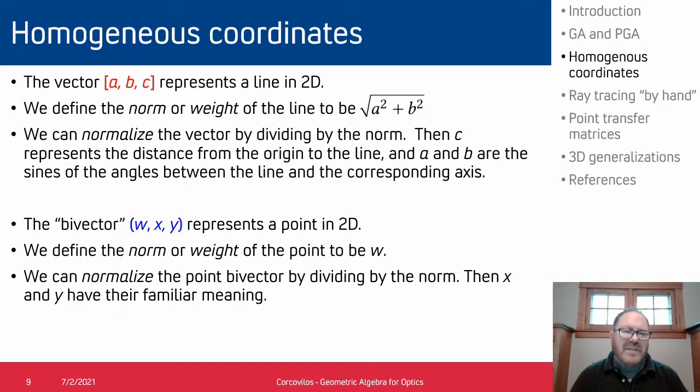The mathematical language we use in PGA is homogeneous coordinates. So for example we can represent a line by a vector [a, b, c] and if we multiply that vector by a scalar then we get an identical geometric element. So that leads to this idea of the norm or weight of the line which we define to be the square root of a² + b². And if we'd like we can normalize the line by dividing by the norm, and then the value of c represents the distance from the origin to the line, and the values of a and b are the sines of the angles between the line and the corresponding axis.